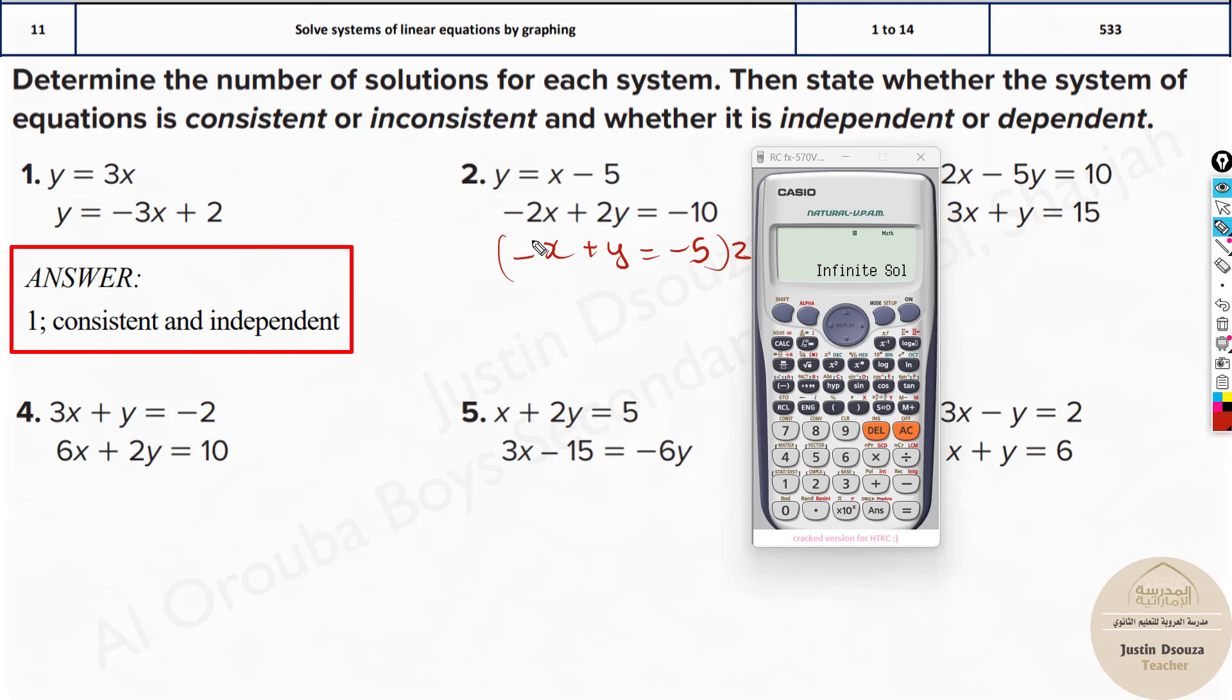I'll multiply here minus 2x. But you need to multiply this 2 throughout, not just for one term. Plus 2y equals minus 10.